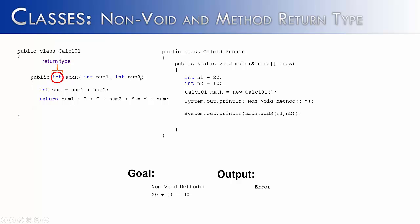It doesn't matter that it's taking in two integers — what it returns does not have to match what it takes in. So instead of returning an int, I want to return a string. I'd simply change this to string, and now my program would work. It would say 'non-void method 20 plus 10 equals 30'. I really wanted to point out that different data types can be used here — what you take in does not dictate at all what is returned by a non-void method.